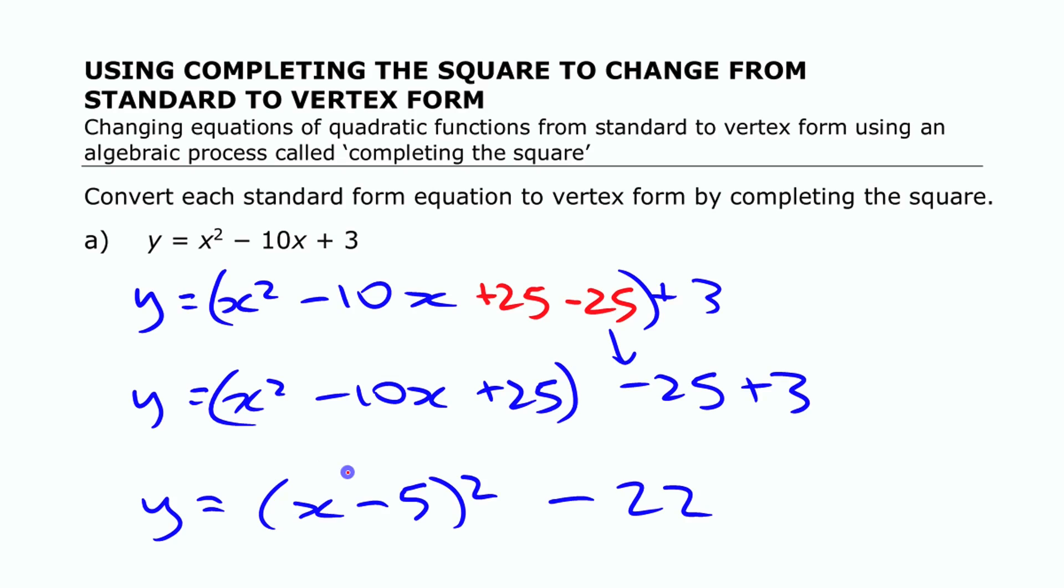So again, my favorite thing to sub in is zero because if I put zero in for this x here, it's quick and easy to work with. That is negative 5 squared is 25 minus 22 gives me 3.